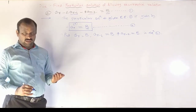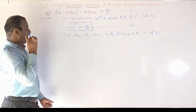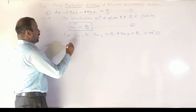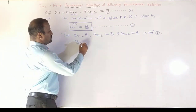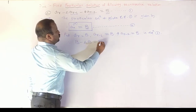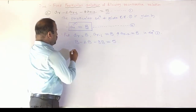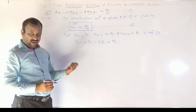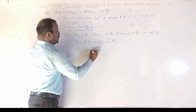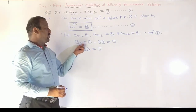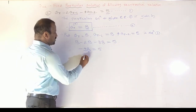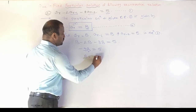Putting aᵣ = B, aᵣ₋₁ = B, aᵣ₋₂ = B into the equation: B - 2·B - 8·B = 5. Simplifying: B - 2B - 8B = -9B = 5. Therefore B = -5/9.